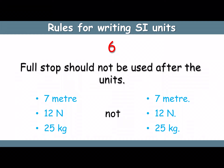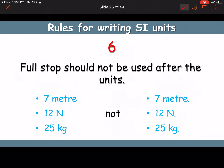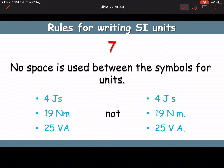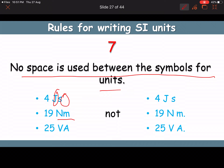Rule 6: a full stop should not be used after unit symbols. Writing '7 m.' with a dot is a mistake. Rule 7: no space is used between symbols of combined units — for example, joule·second, Newton·meter, volt·ampere — no space between them.